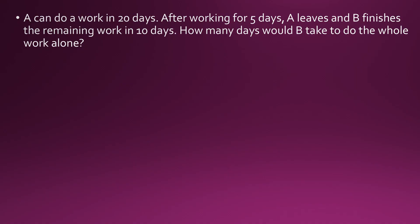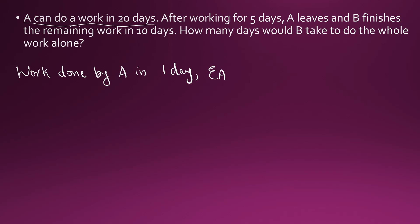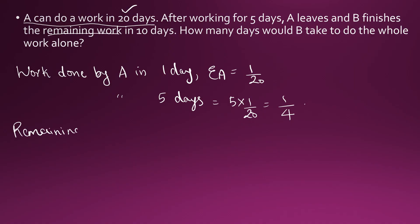A can do a work in 20 days. After working for 5 days A leaves and B finishes the remaining work in 10 days. How many days would B take to do the whole work alone? Work done by A in 1 day is 1 by 20. In 5 days A does 5 into 1 by 20, which is 1 by 4. B finishes the remaining work in 10 days. The remaining work is 1 minus 1 by 4, which is 3 by 4.